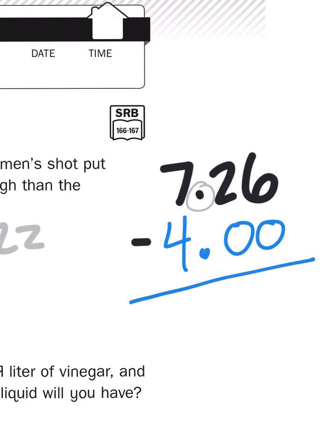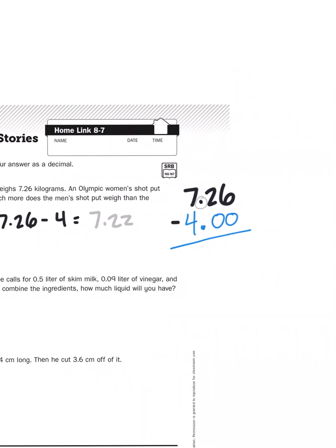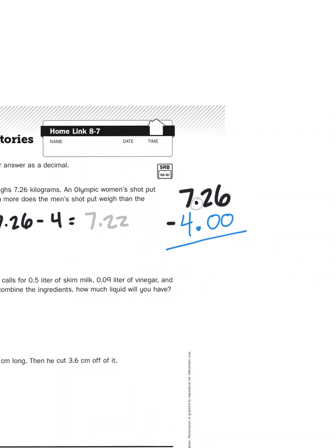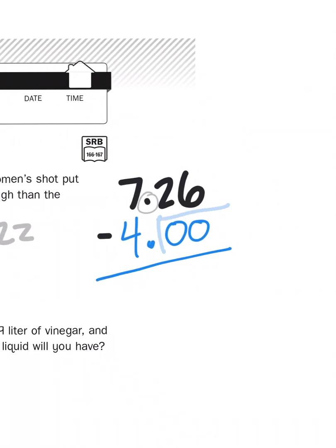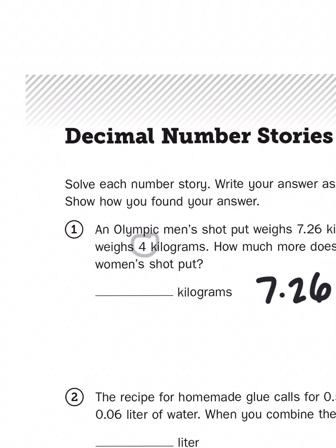So, when I line up this subtraction problem here, I have to include some place value holders. It's those zeros right there that are doing the job.